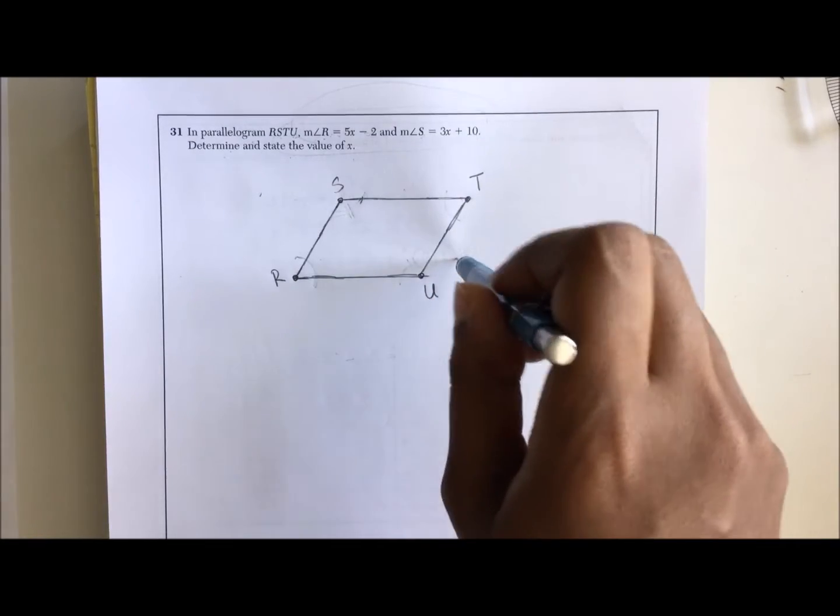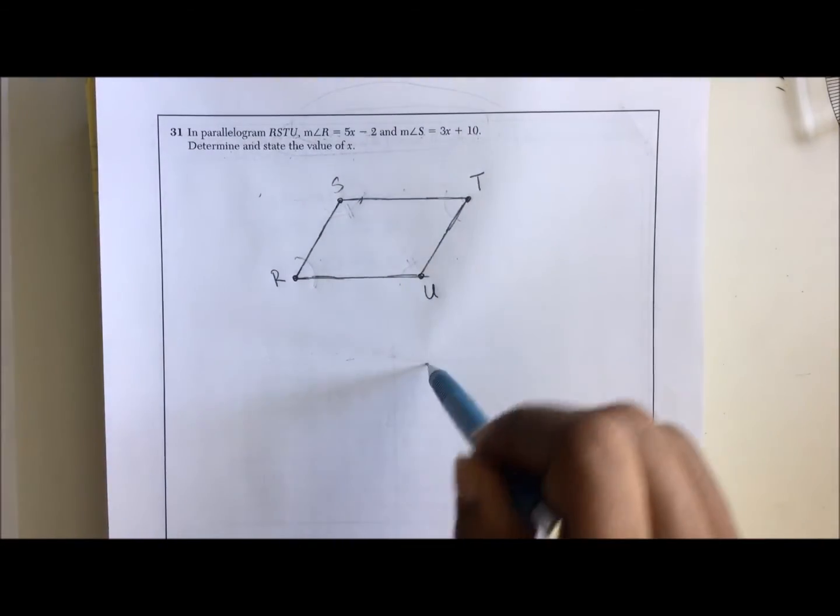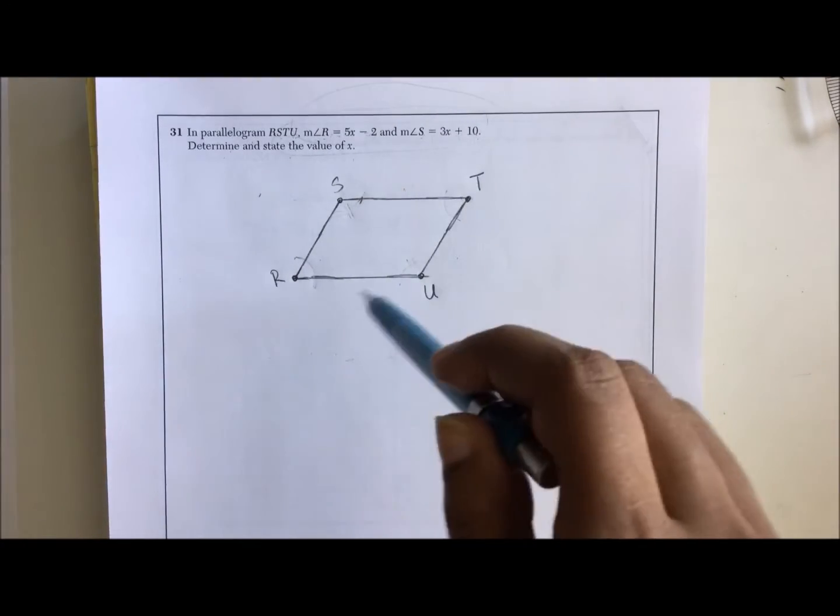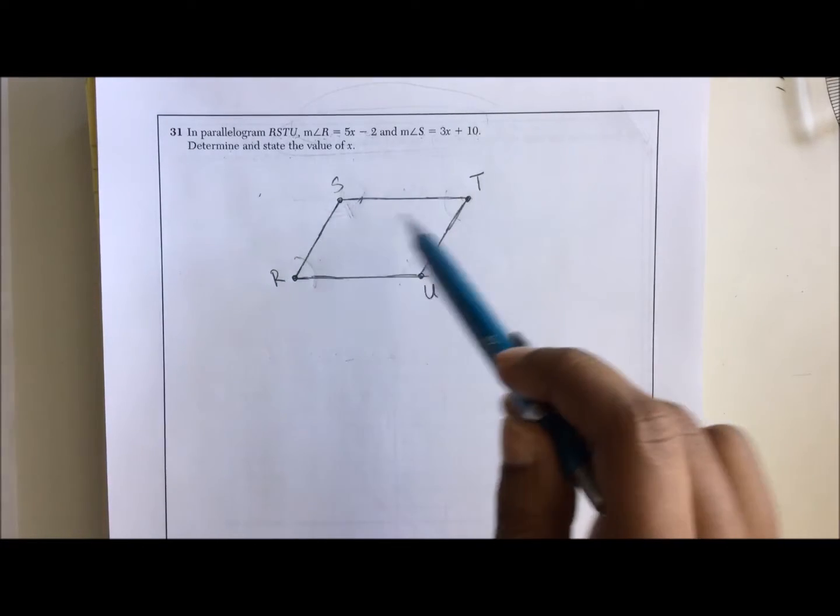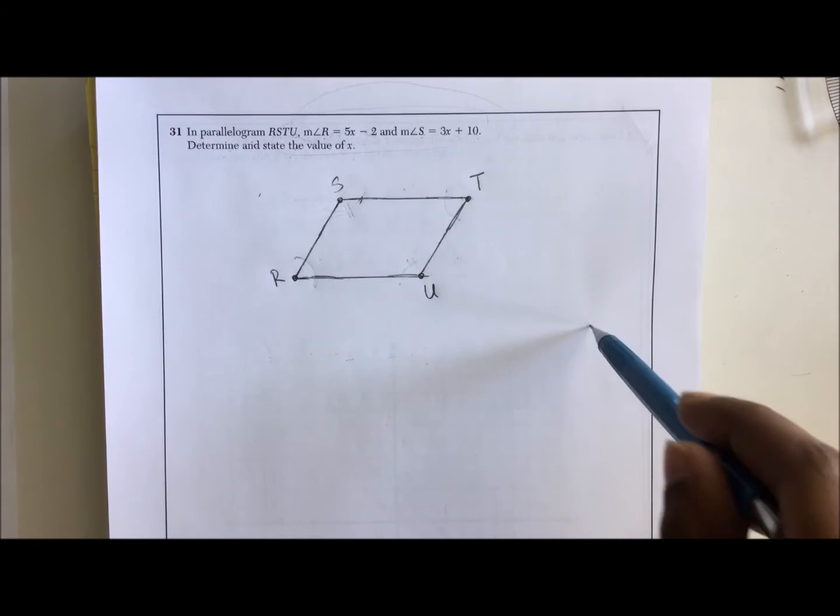Now when you're given problems like this, it's really important to study the properties of not just parallelograms but other quadrilaterals and definitely triangles. You're definitely going to come across find the missing angle or find the missing side. And it's really up to you to remember these properties that you've been studying.